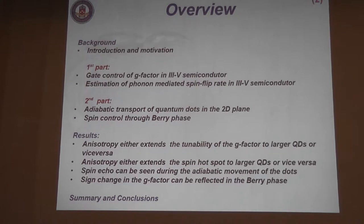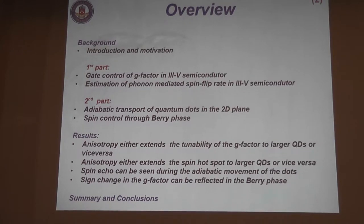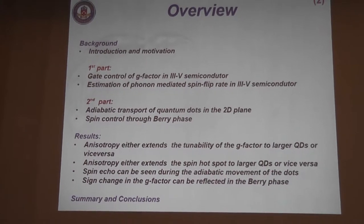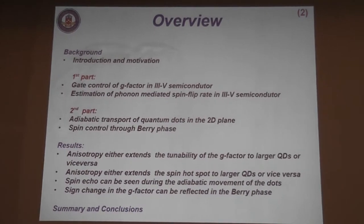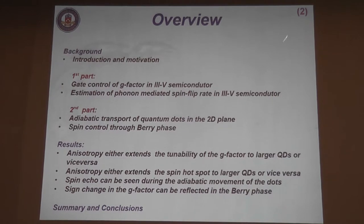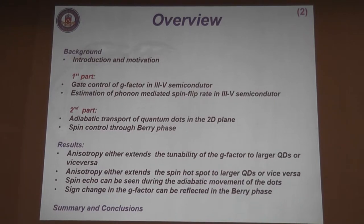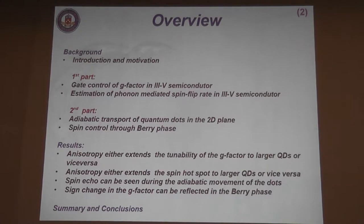I'll give a brief introduction and motivation for this work. Basically, what we do is related to coupled effects in low-dimensional nanostructures, and spin-orbit coupling comes naturally. I'm going to talk about gate control of the g-factor in semiconductors, and its estimation of phonon-mediated spin-flip rate specifically in semiconductors with possible application in quantum computing. The second part is adiabatic transport of quantum dots in a two-dimensional plane, and spin control through Berry phase.